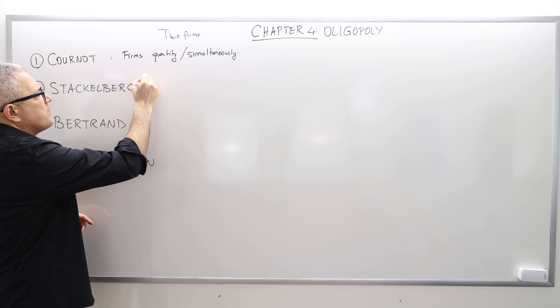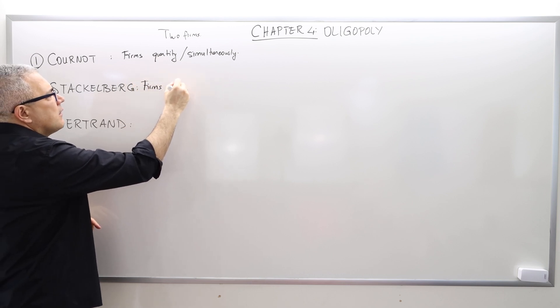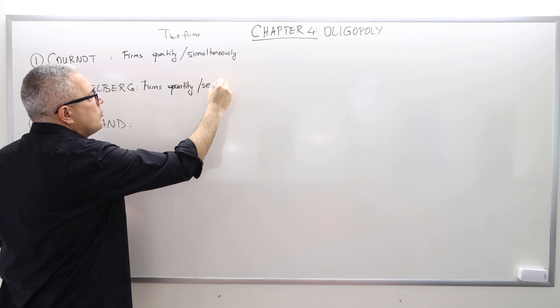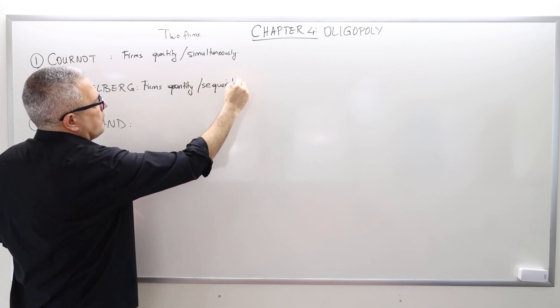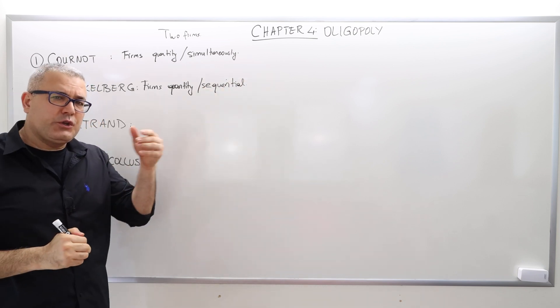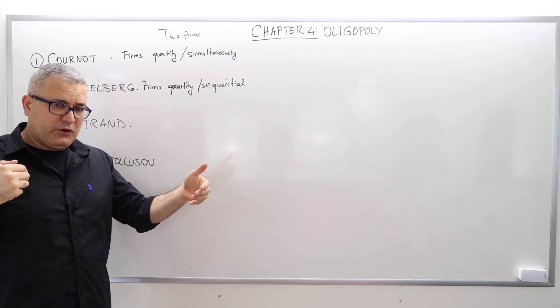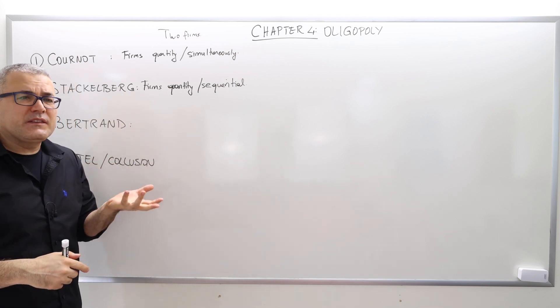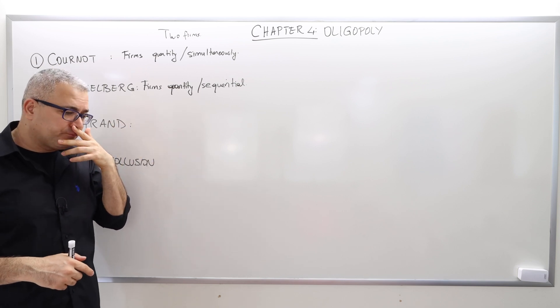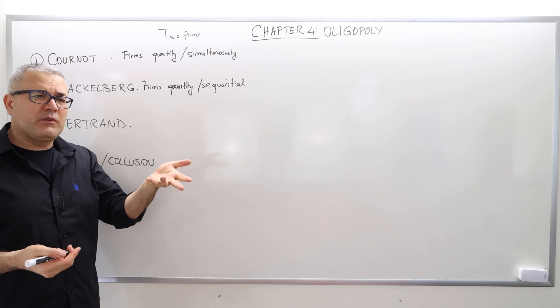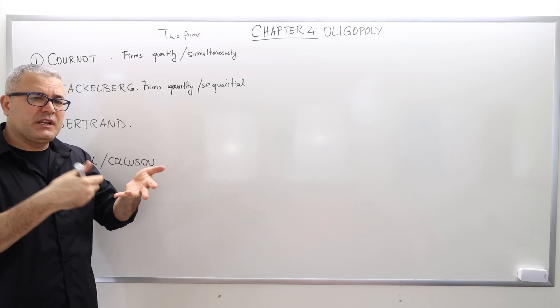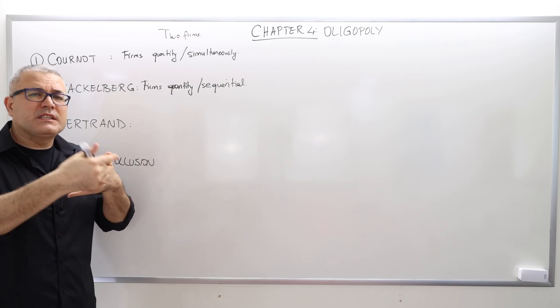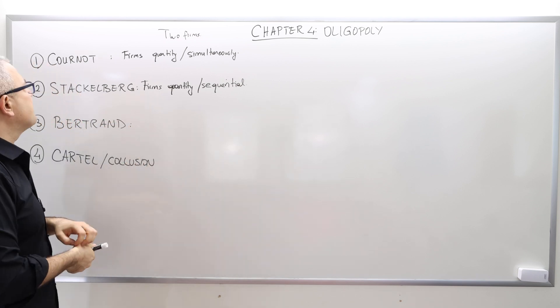In the Stackelberg, firms again choose quantity, however, the move is sequential, which means one firm is going to choose an action, a strategy. The other firm will observe that choice and move accordingly. Both of those competitions make sense. In the Stackelberg competition, you can think of like Apple releases a new cell phone and then Samsung observes this action and releases another model, for example. So there is this sequential move in the competition.